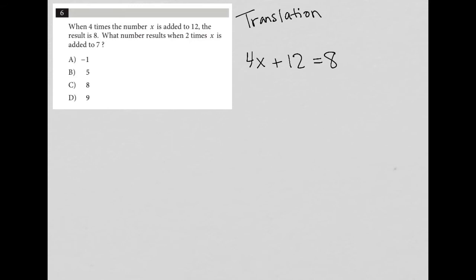The next sentence says, what number results when two times X, so 2X plus, sorry, is added to 7, so plus 7. And since it's asking what number results, I'm going to just place a question mark right there.